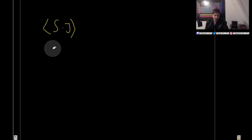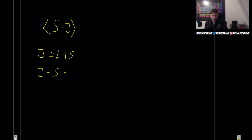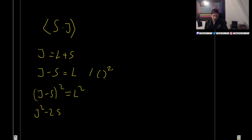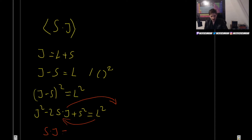The place where this comes from is the definition of J. We know J equals L plus S, so J minus S equals L. Squaring both sides gives J squared minus 2 S dot J plus S squared equals L squared. Rearranging: S dot J equals J squared minus L squared plus S squared, divided by two.